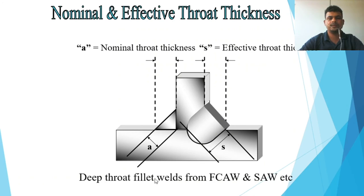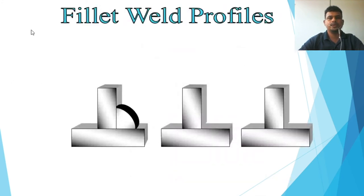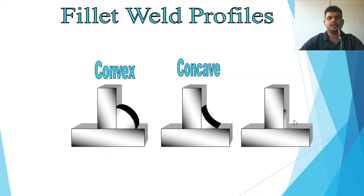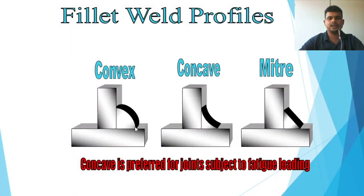The deep throat fillet weld, from processes like FCAW and SAW, penetrates very deeply, giving a large effective throat thickness. Fillet weld profiles include three types: convex, concave, and mitre. Concave fillet welds are preferred for joints subjected to fatigue loading, as recommended by design standards. Fatigue loading will be discussed further in another lecture.